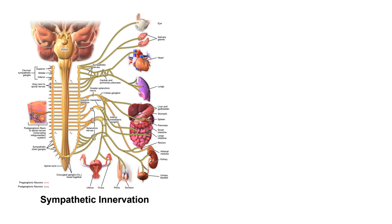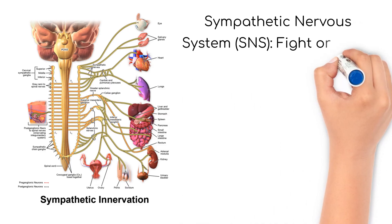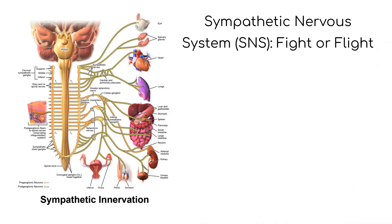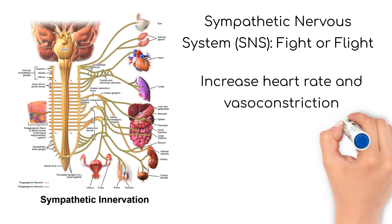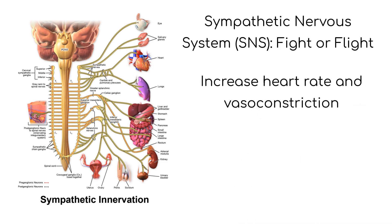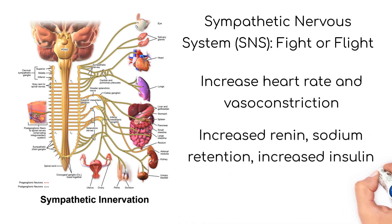The sympathetic nervous system, or SNS, is part of the autonomic nervous system and is commonly known as the fight-or-flight system. SNS activity causes an increase in heart rate and vasoconstriction, both of which increase blood pressure. Other effects of SNS activity include increased renin, renal sodium retention, and insulin resistance.